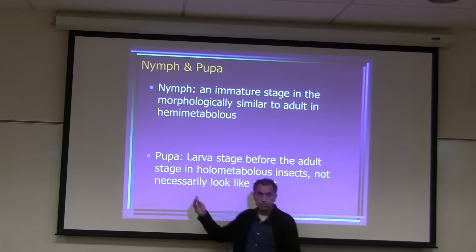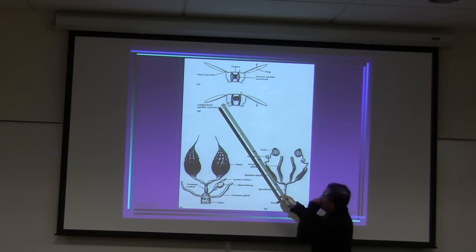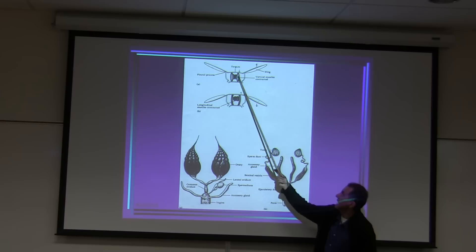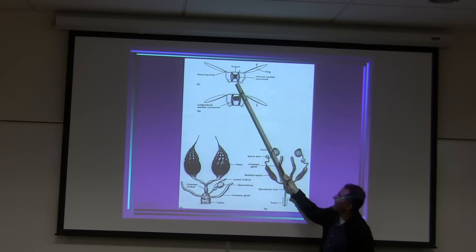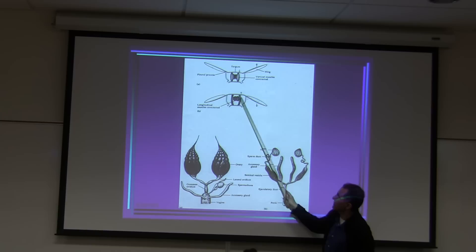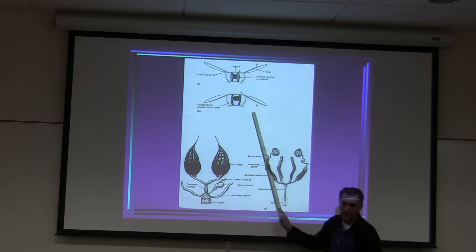Here is an indirect flight muscle diagram. A muscle is attached to the tergum and to the sternum. Longitudinal muscles are attached to circular muscles. When these muscles contract, the wing goes up and down — this is the indirect flight muscle system.